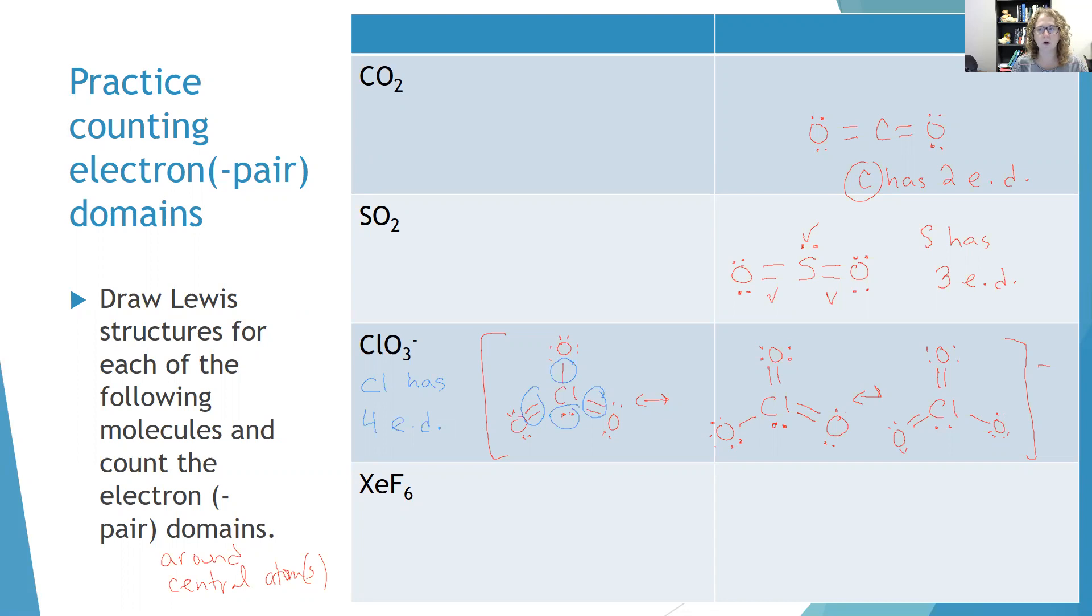Let's do one more. Pause the video and see what happens. Xenon hexafluoride looks just like this. Xenon in the middle with six single bonds around it and each of those fluorines with three lone pairs. But the important part, of course, is that we have one, two, three, four, five, six bonding domains. So xenon has six electron domains around it.